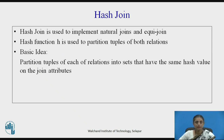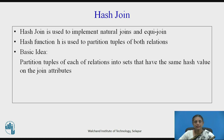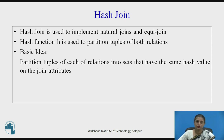Hash join is especially used for natural joins and equi joins. A hash function is used to partition the tuples of both relations. The basic idea behind hash join is to partition the tuples of each relation into sets that have the same hash value on the join attribute.